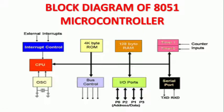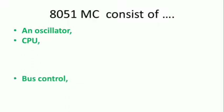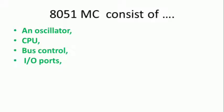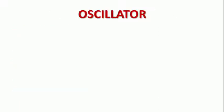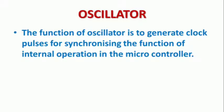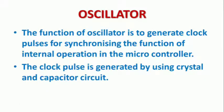The microcontroller consists of an oscillator, CPU, bus control, input-output ports, serial port, timer, and interrupt control. The function of the oscillator is to generate clock pulses for synchronizing the internal operations of the microcontroller. The clock pulse is generated by using a crystal and capacitor circuit — that is the crystal oscillator.